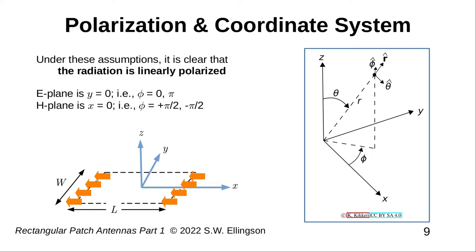Finally, note that we can now identify the E and H planes for this antenna. The E plane is the Y equals zero plane, that is, when phi is either zero or pi. And H is the X equals zero plane, that is, phi equals plus or minus pi over two.